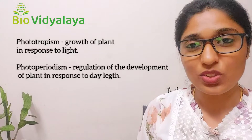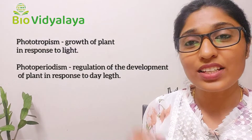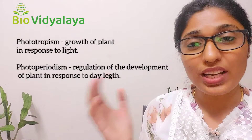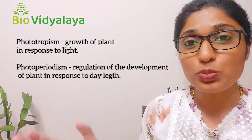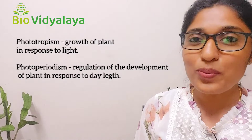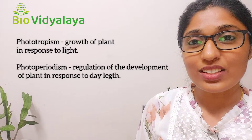So to summarize: the growth of plants in response to light is called phototropism, and the regulation of the development of a plant — for example, flowering — in response to light is called photoperiodism. I hope you now understand the difference between phototropism and photoperiodism.